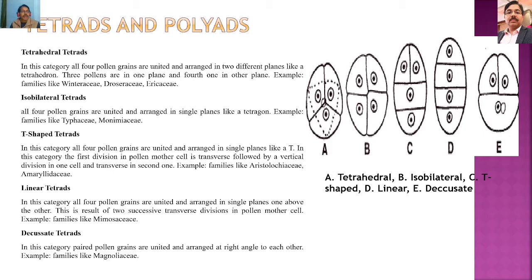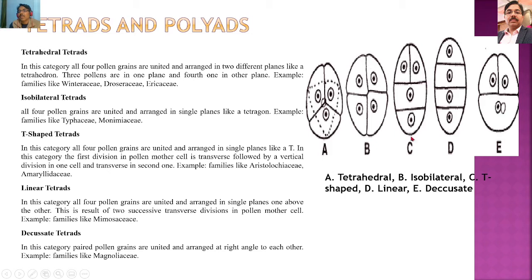In T-shaped tetrads, the first division of the pollen mother cell is transverse, followed by a vertical division in the upper cell and a transverse division in the lower cell, resulting in a T-shaped structure. In linear tetrads, the plane of division is transverse throughout, as a result of which all four cells are arranged one above the other.